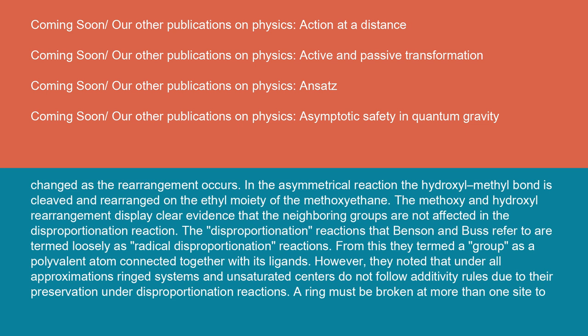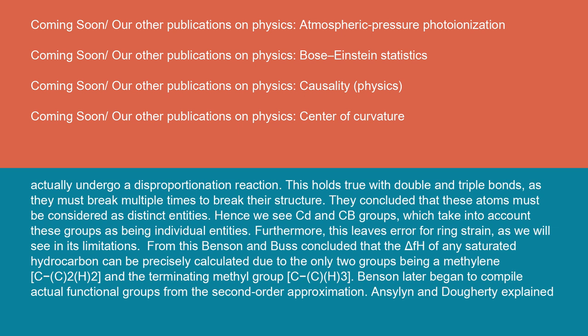The disproportionation reactions that Benson and Buss refer to are termed loosely as radical disproportionation reactions. From this, they termed a group as a polyvalent atom connected together with its ligands. However, they noted that under all approximations, ring systems and unsaturated centers do not follow additivity rules due to their preservation under disproportionation reactions. A ring must be broken at more than one site to actually undergo a disproportionation reaction. This holds true with double and triple bonds, as they must break multiple times to break their structure. They concluded that these atoms must be considered as distinct entities. Hence, we see CD and CB groups, which take into account these groups as being individual entities.